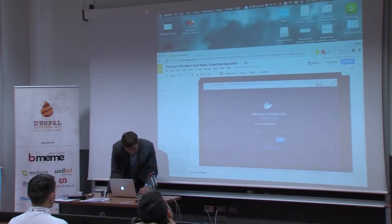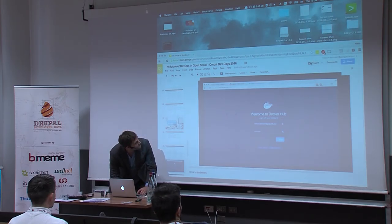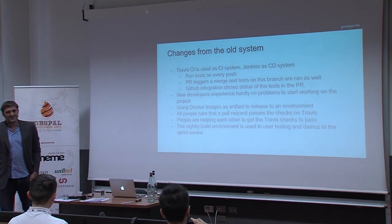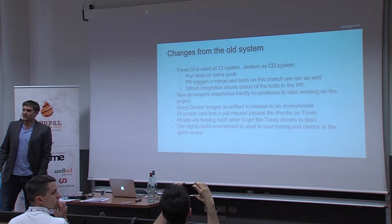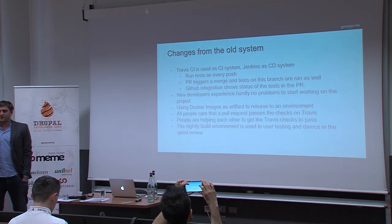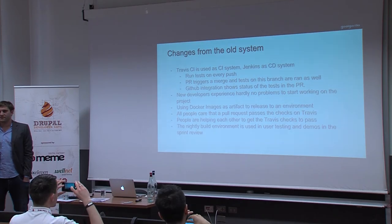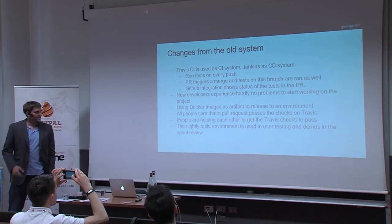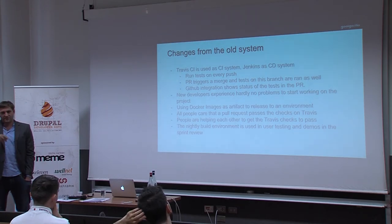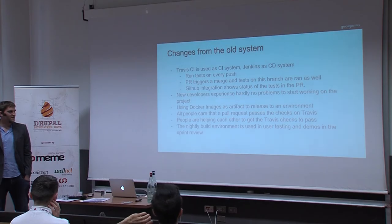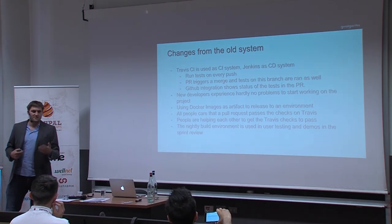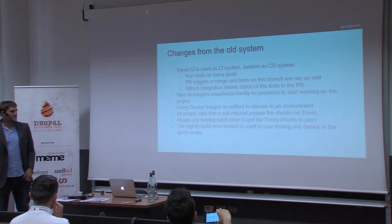What we observed from these changes: people really act on failing checks now. Docker is great for developers — no problems setting it up compared to Vagrant and Puppet. The artifacts work very well and are fast. Everyone cares that the check is green; when it's red and a test fails, people help each other asking 'what can I do to make this test pass?' The end result: we've never had a failing test in master so far. The nightly build has been very useful too.